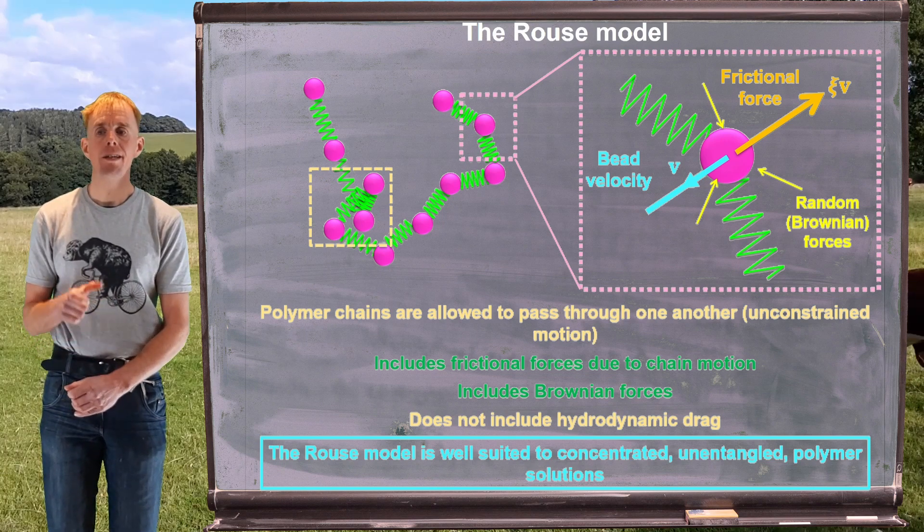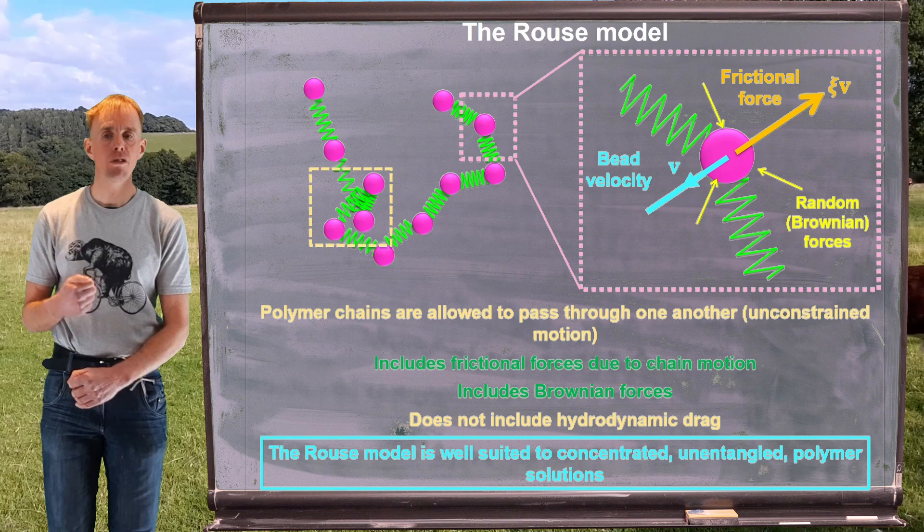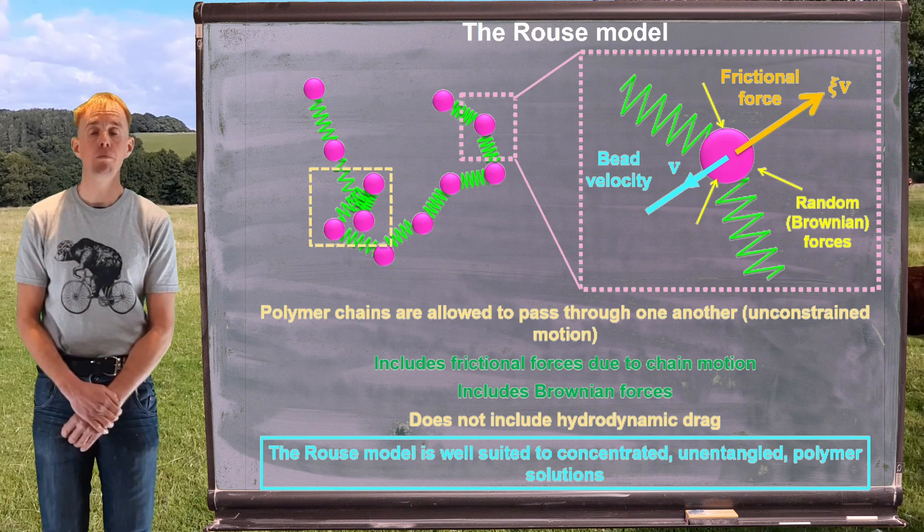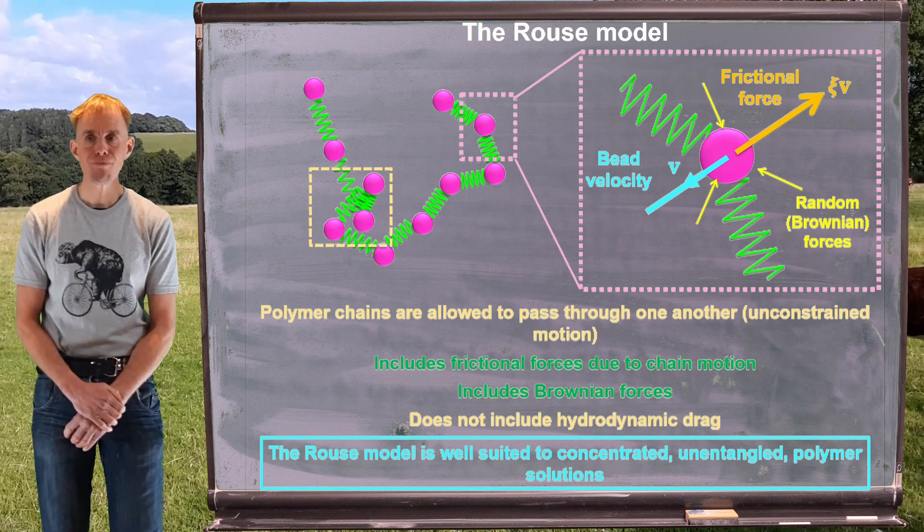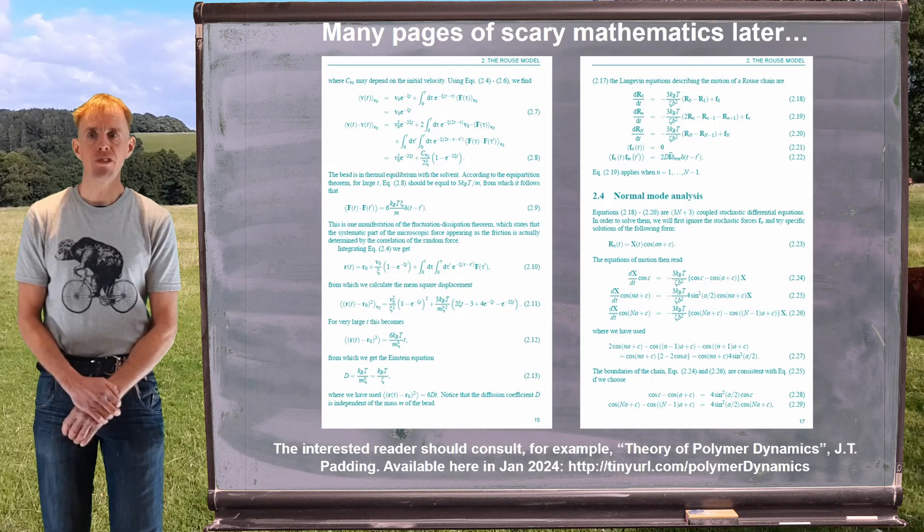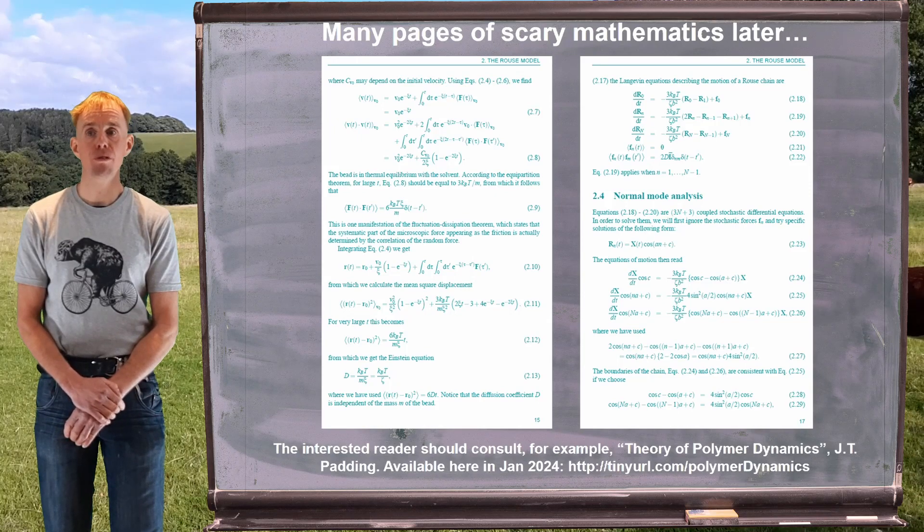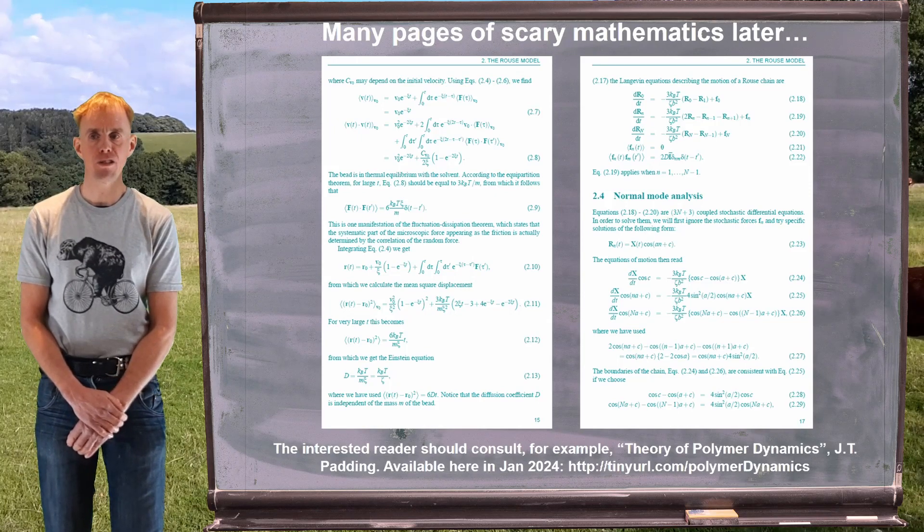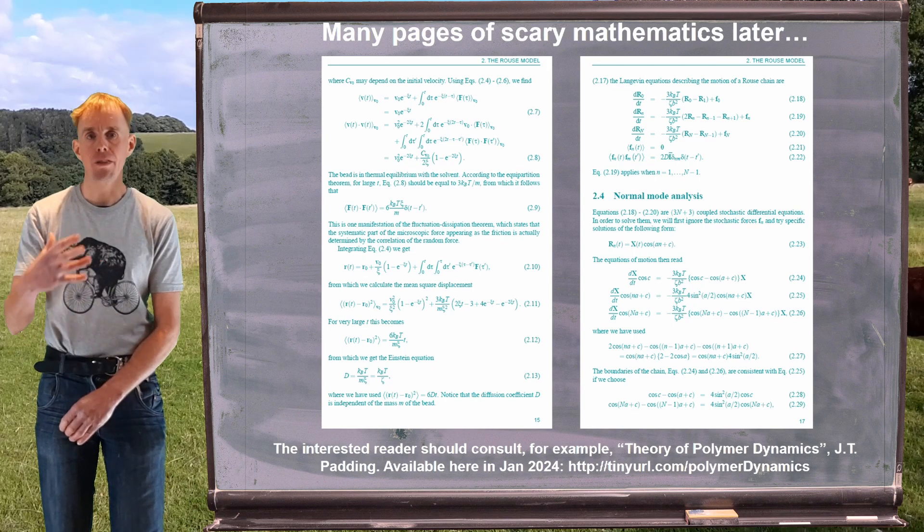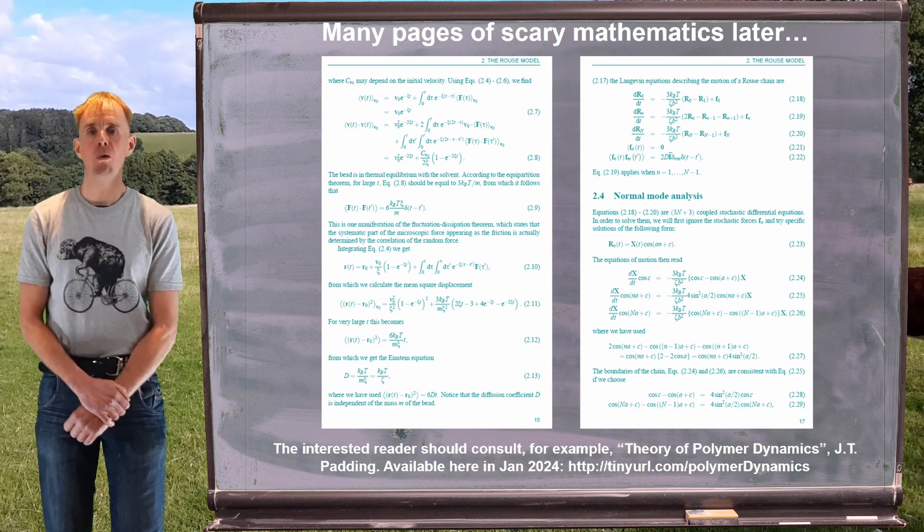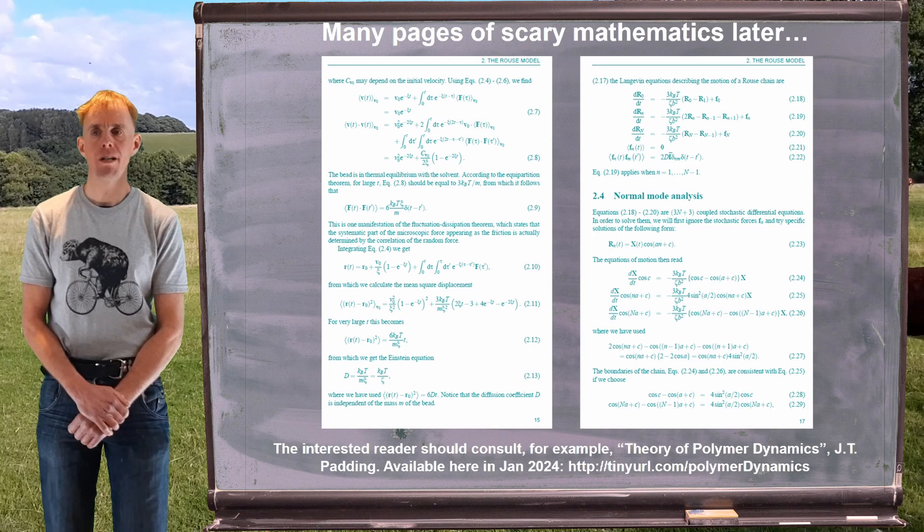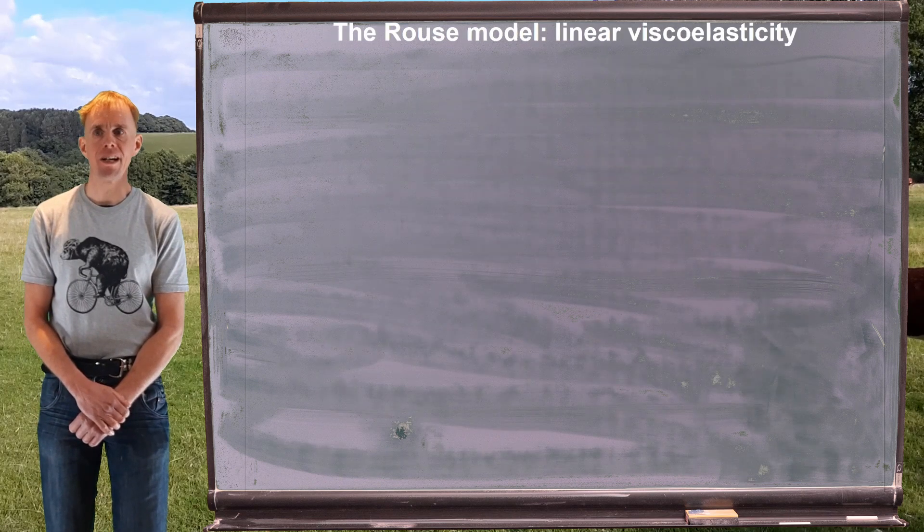The Rouse model will be limited in applicability to those situations where hydrodynamic drag is small compared to the other forces such as friction and Brownian. This model is very well suited to concentrated, unentangled polymer solutions. The polymer physicists will work through many pages of scary mathematics to go from that physical description of a coarse-grained polymer chain to a final result, which is what we're going to look at.